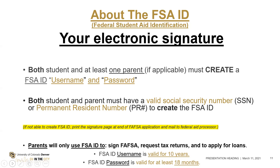The difference between using the FSA ID and submitting the signature page is processing time. If submitted electronically, it takes about three to five days to process. If you submit the signature page, it can take four weeks before the financial aid office receives your information. The FSA ID username is good for 10 years. You will do the FAFSA application every single year, so put your FSA ID in a safe place. Your password will change every 18 months, so every year when you log on to update your FAFSA, you'll also be changing your password.